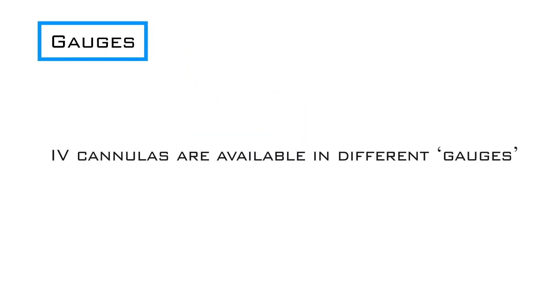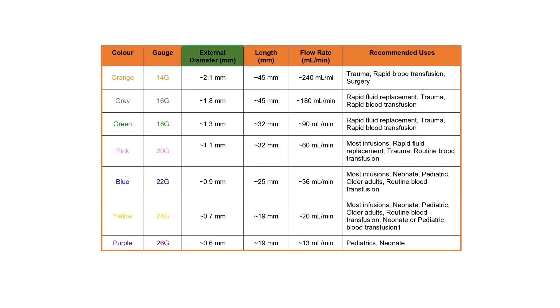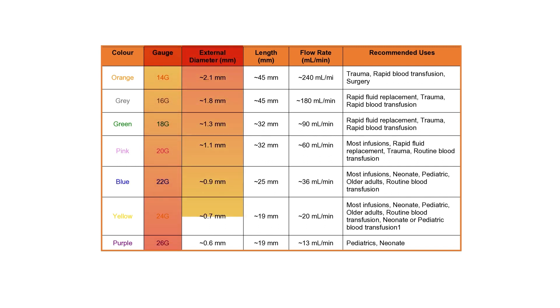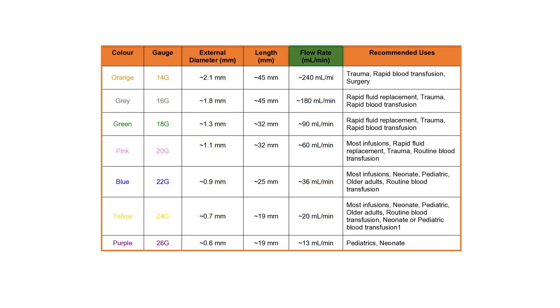Gauges. IV cannulas are available in different gauges, which is an internationally used scale for sizing needles. It refers to the diameter of the IV cannula needle. The higher the gauge number, the smaller the cannula. Different sized cannulas move liquid through them at different rates, which is called flow rate.